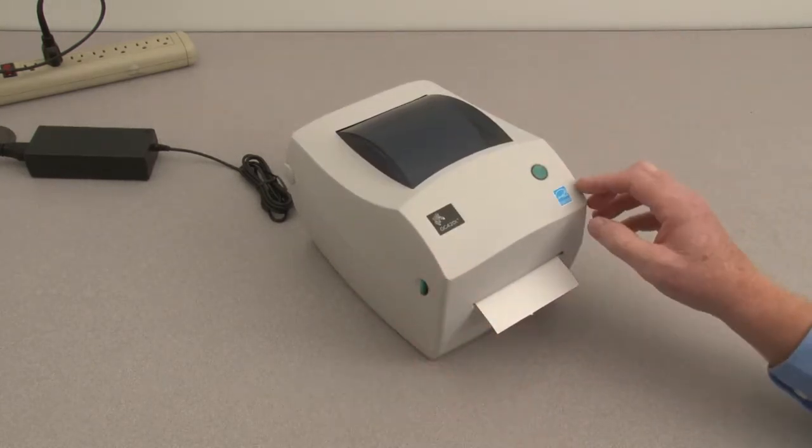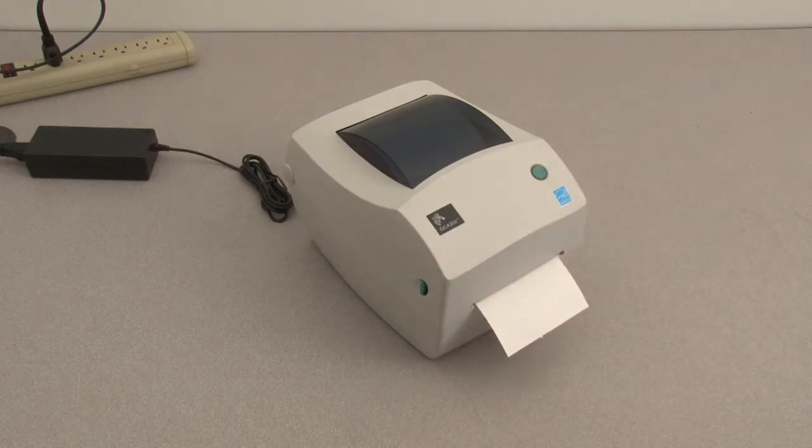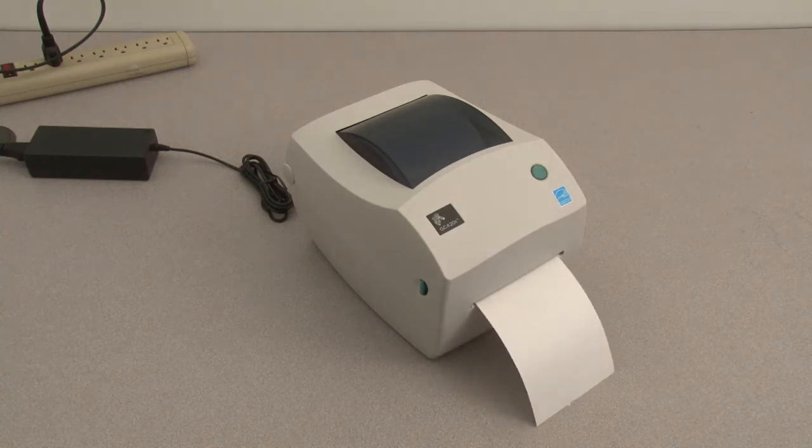The status indicator will flash. Press and hold the feed button until the status indicator flashes twice, then release. The printer will feed and measure several labels.